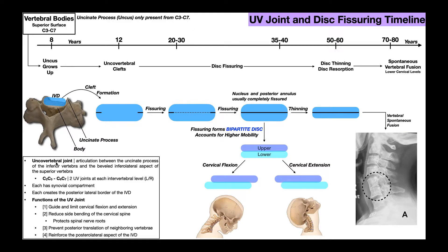In the previous video, we discussed the function and structure of the uncovertebral joints, which are unique to the cervical spine. What we want to do here is discuss the timeline of development of the uncinate process of the uncus, and talk about how this leads to fissuring of the intervertebral disc that sits beside it. That fissuring also leads to the formation of what's called a bipartite disc.